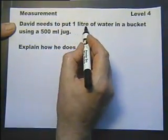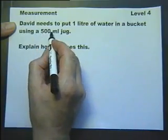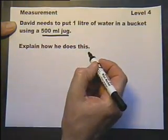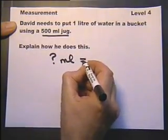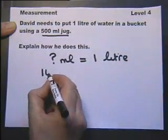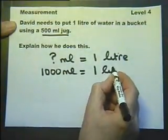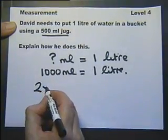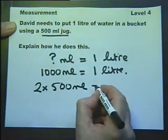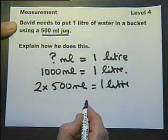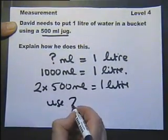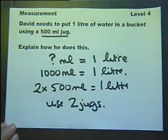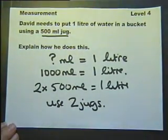Measurement. David needs to put one litre of water into a bucket using a 500 millilitre jug. This all stems on the piece of information: how many millilitres are there in a litre? You're expected to know that there are 1,000 millilitres in one litre. So two jugs would in fact be one litre. Therefore he's going to use two jugs, because the question says explain how he does this — he'll have to use two jugfuls.